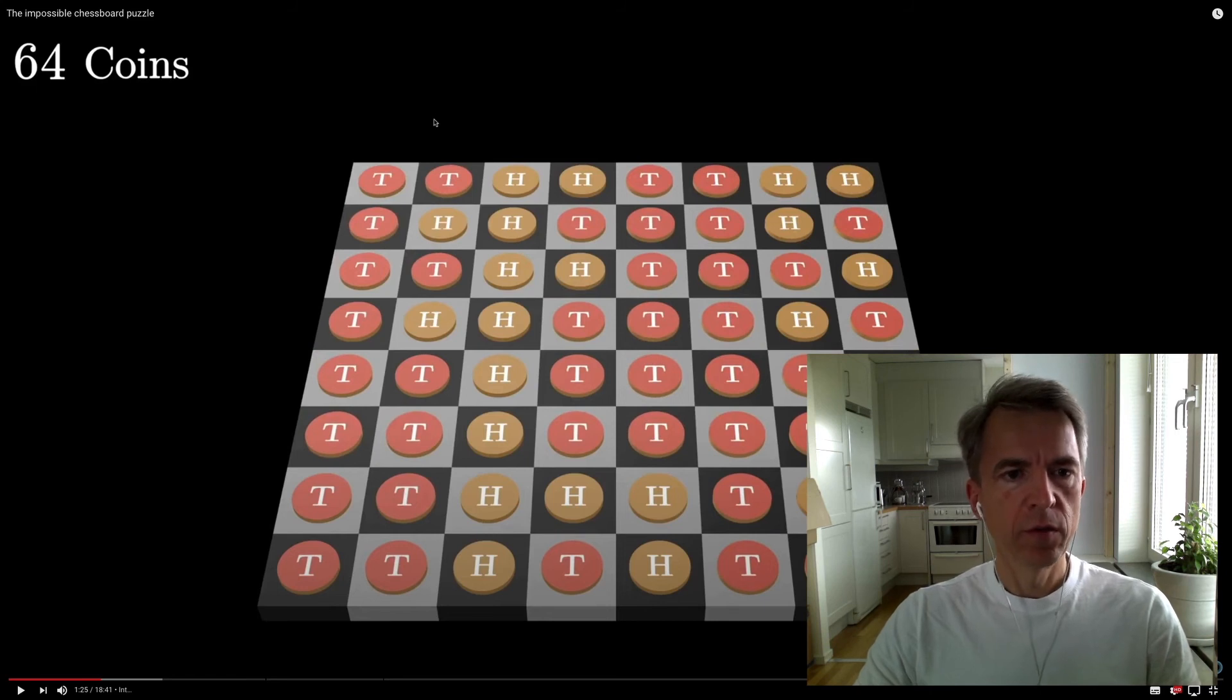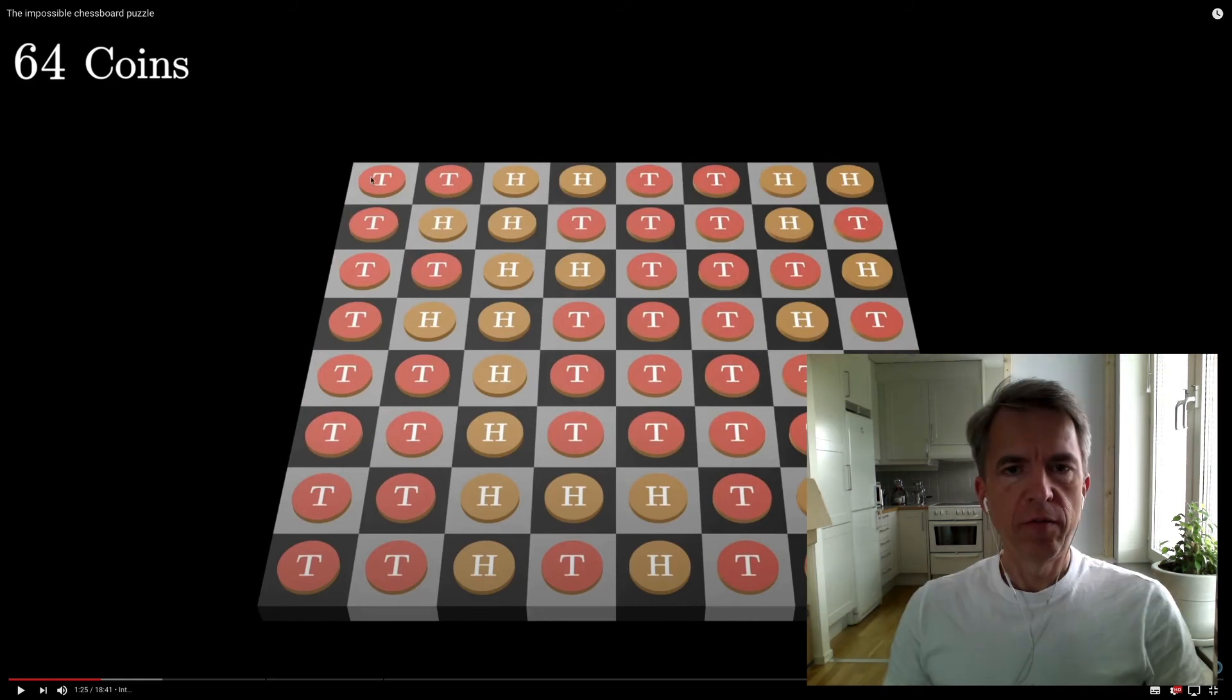The diagonals are special, so for example a strategy could be to check the parity of this diagonal. Then prisoner number one can always flip a coin and ensure the parity of this diagonal is odd or even. And then prisoner number two can check the parity, and if it's odd it means something, and if it's even it means something else. Flipping a coin on the diagonal will change the parity of the diagonal.